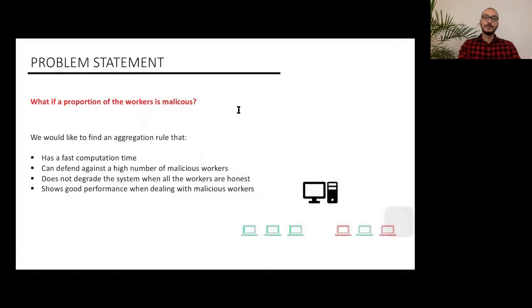Now, what happens when a proportion of these workers are malicious? If the PS is only averaging the received vectors, then it suffices to just have one malicious worker to make the system completely fail. So what we need is a more robust aggregation rule to defend against bad behavior.